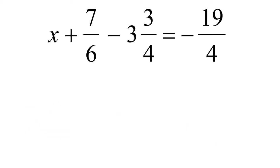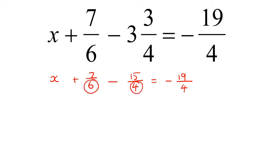So that's the first thing I would do. So we have x plus 7 over 6 minus — now 3 times 4 is 12, plus 3 is 15 over 4 — equals negative 19 over 4. Now when you are at this step, look at all the numbers at the bottom. You can also put the x term over 1, because it is over 1 if there's nothing there.